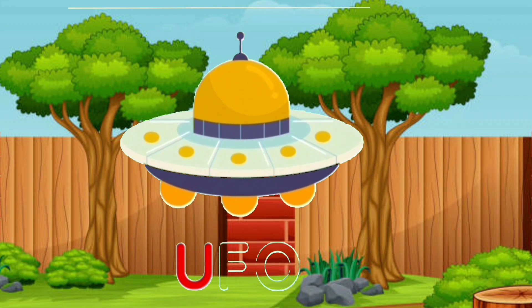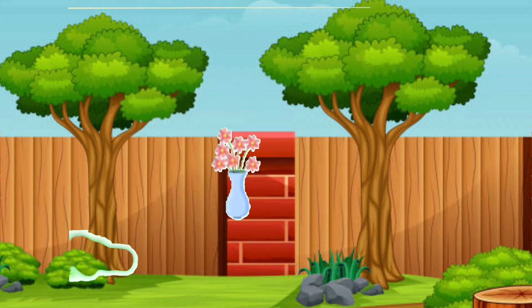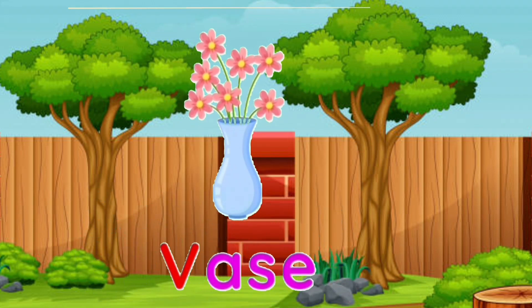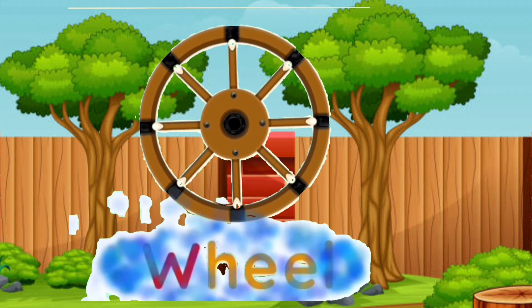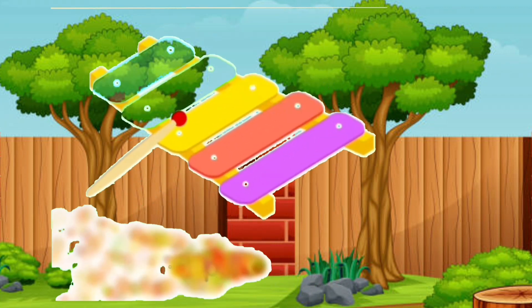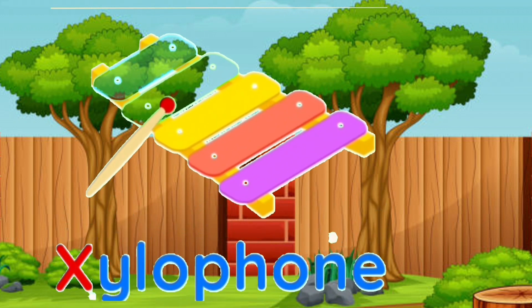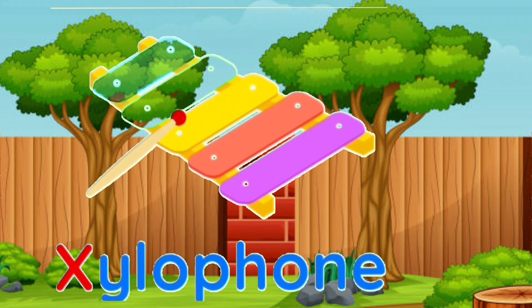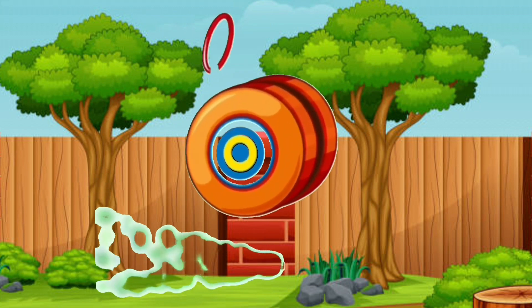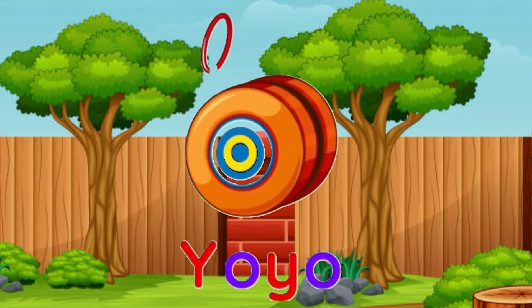U is for ufu, V is for waist, W is for wheel, X is for yellow phone, Y is for yoyo.